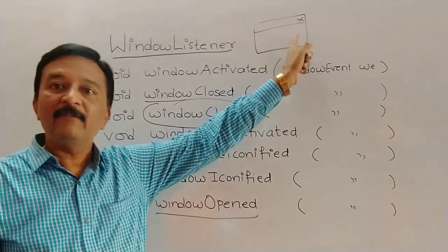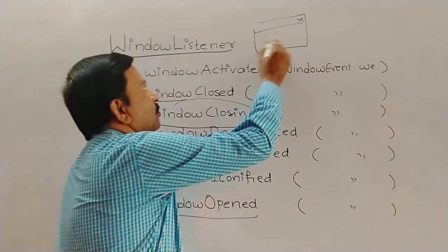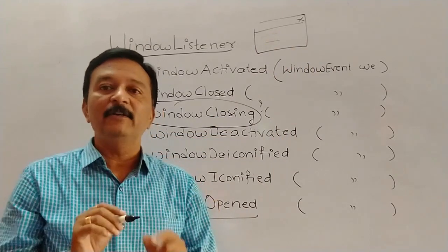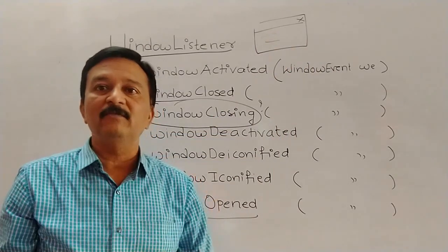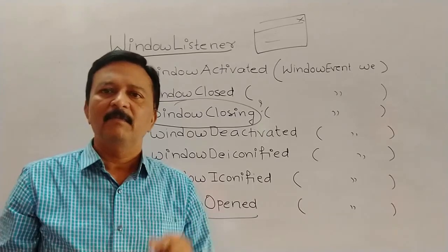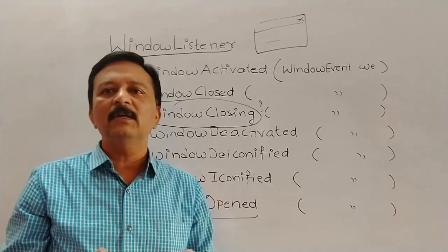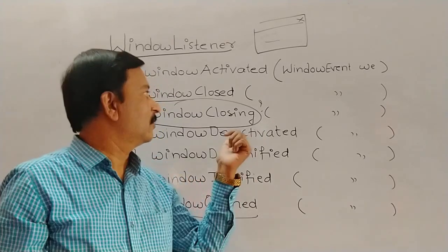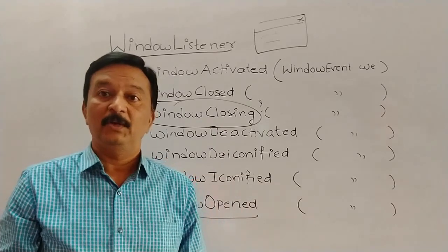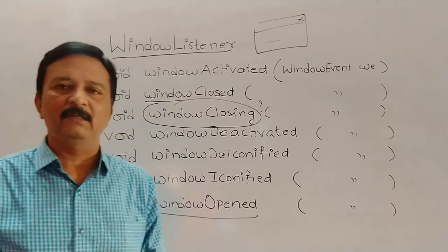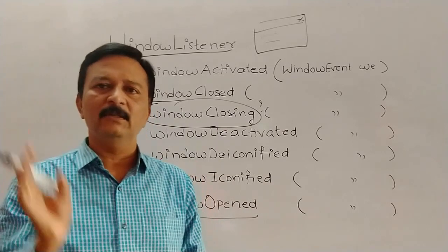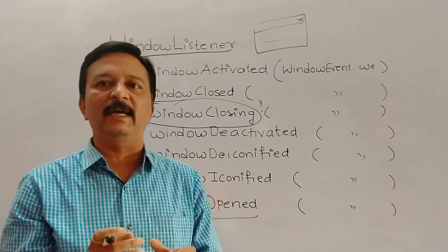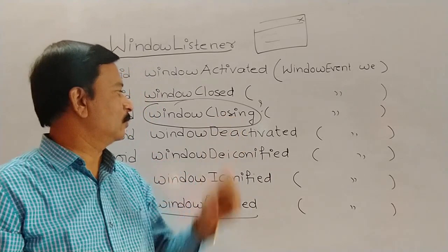For example, when we are closing a file, a window appears asking 'Do you want to save the changes? Yes or No.' That process — the dialog that appears while closing — is what we call windowClosing. So we have to understand these words very clearly. WindowOpened means the file is opened. WindowClosing is the process happening while closing. WindowClosed means the window has already been closed.